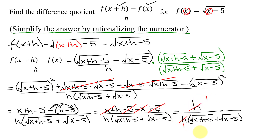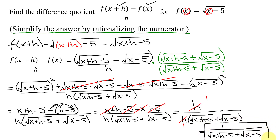After cancelling h, the numerator becomes 1, divided by the square root of x+h minus 5 plus the square root of x minus 5. That is the simplified answer. It may not look simpler, but in calculus, when h approaches 0, this expression is defined — whereas the original form was undefined.